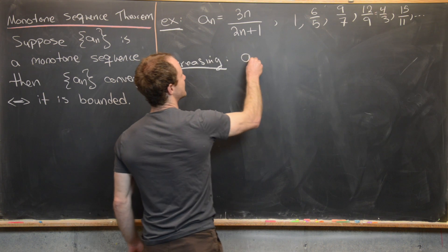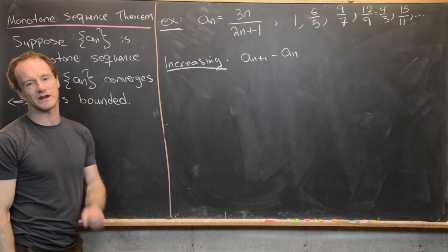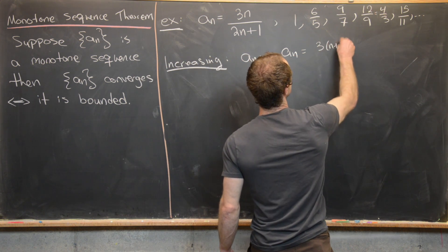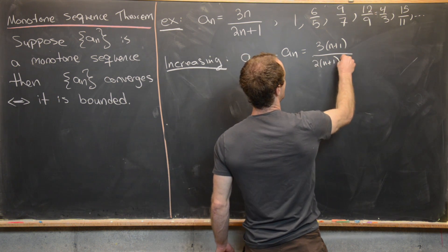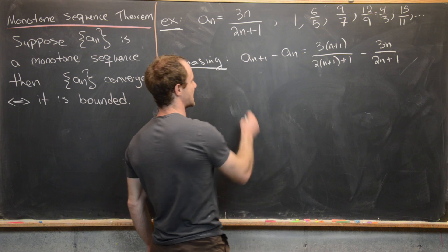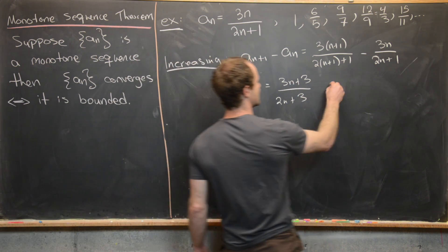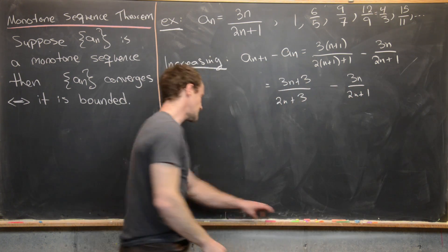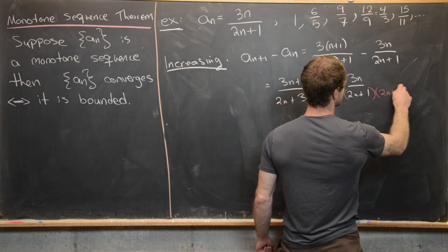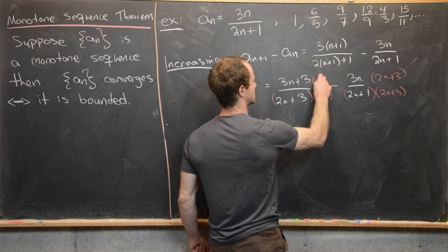We'll show the sequence is increasing by looking at the difference a_{n+1} minus a_n. If we can show that's always positive, then clearly a_{n+1} is bigger than a_n. So that gives us 3(n+1) over 2(n+1)+1 minus 3n over 2n+1. Simplifying the left-hand term gives us (3n+3) over (2n+3), minus 3n over (2n+1). We'll find a common denominator — the product of these two expressions — multiplying the first term by (2n+1) and the second term by (2n+3).